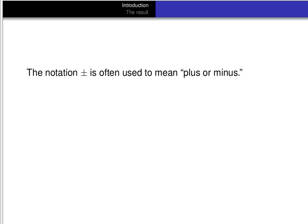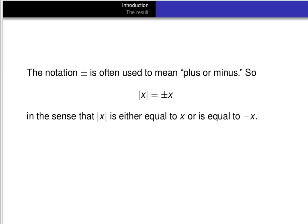You often see the notation with a plus sign and a minus sign written under it — that notation means plus or minus. So the absolute value of x is equal to plus or minus x, in the sense that the absolute value of x is either equal to x if x is positive, or equal to minus x if x is negative. Of course, plus or minus x wouldn't do as a definition because it's ambiguous, but it's useful notation. We could also say that x itself is equal to plus or minus the absolute value of x — it works both ways.